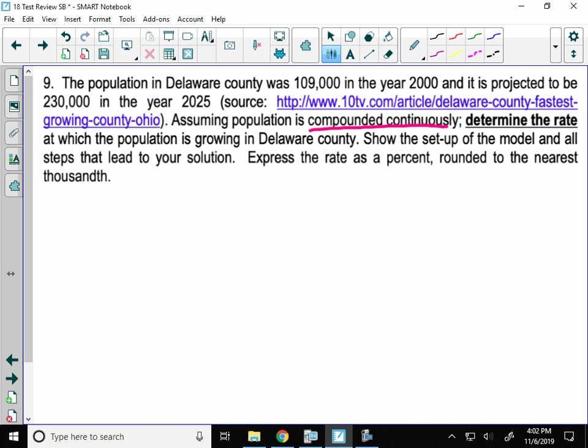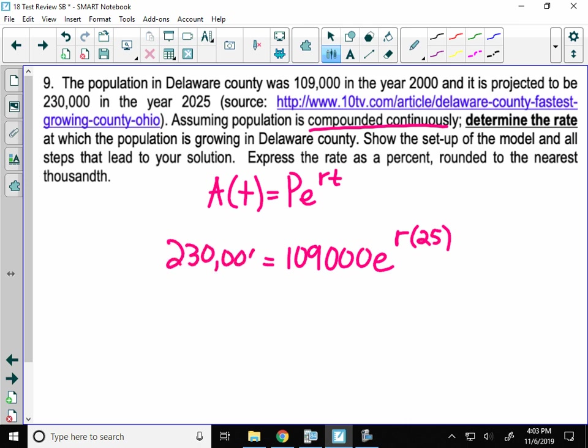So continuously compounded interest is your Pert-formula. So what do we know? We need to know the R. So we should have information for everything else. We know that in 2000, we started with 109,000 people. We don't know the rate, but we know the time, which is 25 years later, to 2025, and that population is 230,000. So this is how that one's set up.